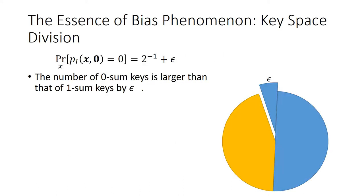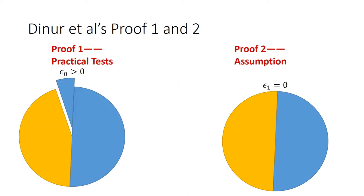Let's get down to the essence of the bias phenomenon. According to its definition, the bias phenomenon reflects the proportion of keys that make the superpoly be 0. The number of zero-sum keys is larger than that of one-sum keys by epsilon. Dinur's dynamic cube attack practically verified a positive epsilon 0 in proof 1. But for proof 2, they simply assume epsilon 1 equals 0.